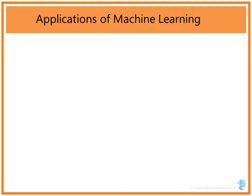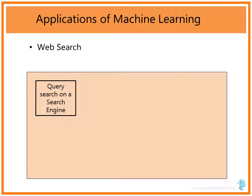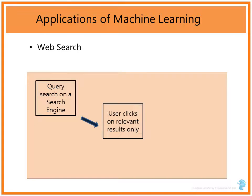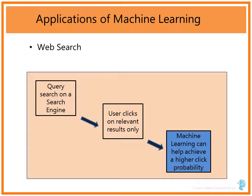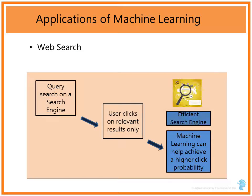Now let's talk about the applications of Machine Learning. I have listed the most popular ones first, and then some upcoming areas as we go down the list. Machine Learning is used in web search in a very big way. When you are searching for some query and the search engine displays a few web pages, you do not click on all of them. If we can capture your preference — the probability of clicking a web page — we can optimize and create a very efficient search engine using Machine Learning algorithms.